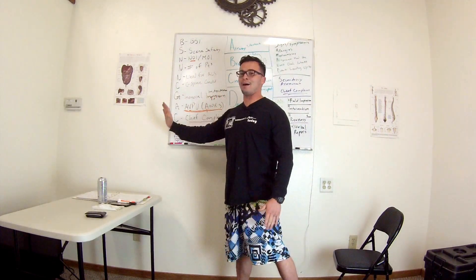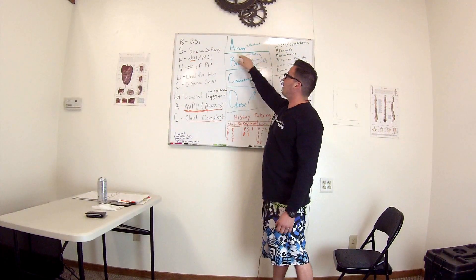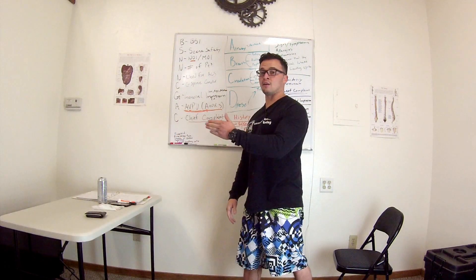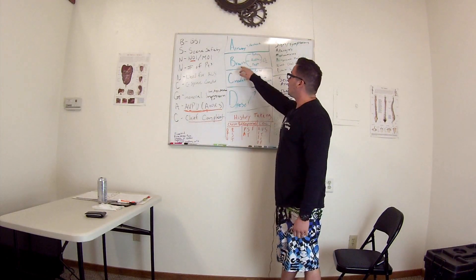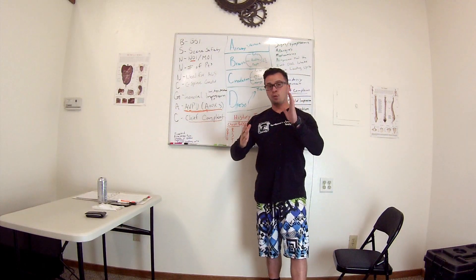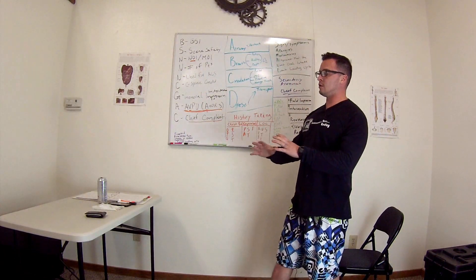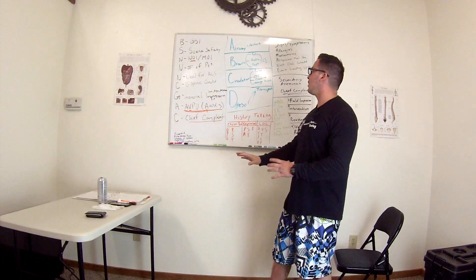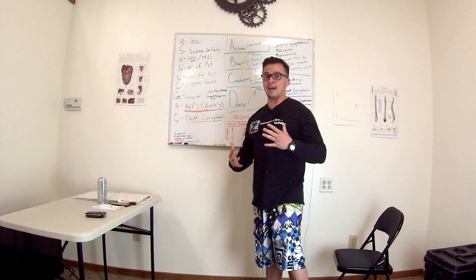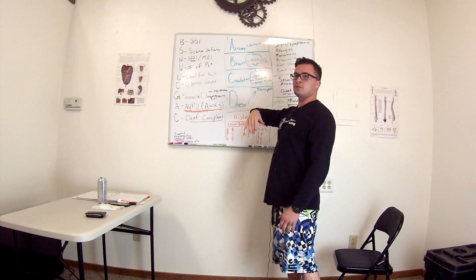Now we're going into the second chunk, which I call the ABCs — airway, breathing, circulation, and diesel. For airway: is my patient's airway patent? Are they talking to me? If yes, you're good to go. For breathing, you want rate, quality, and depth. Normal rate is between 12 and 20 for an adult patient. For quality, go ahead and auscultate the lung sounds — do you hear wheezing or any kind of abnormal sounds? And then depth — if your patient is breathing between 12 and 20 per minute but the depth is inadequate, you still have to step it up with oxygen.